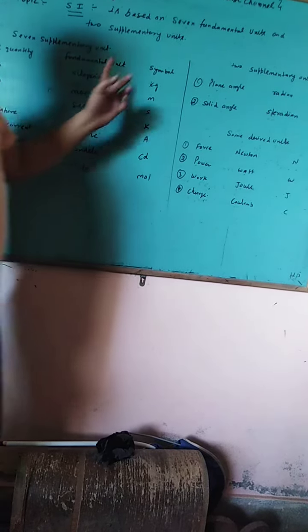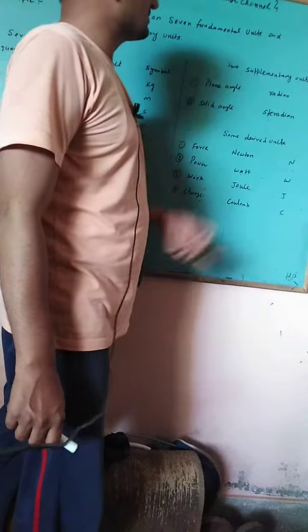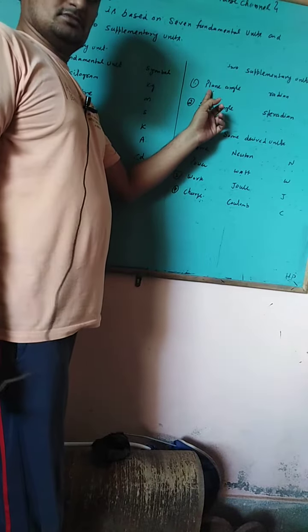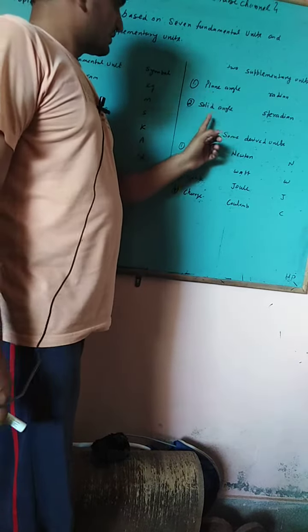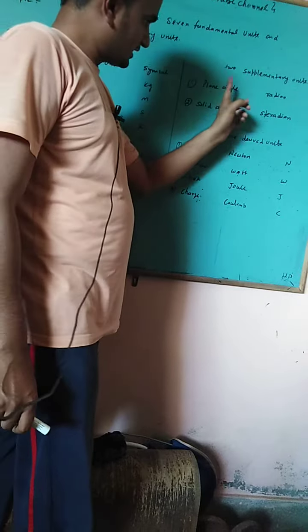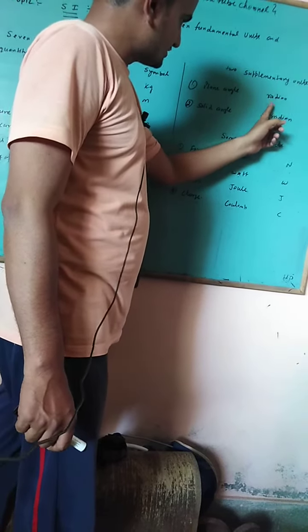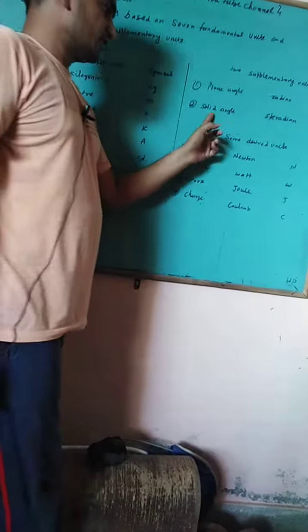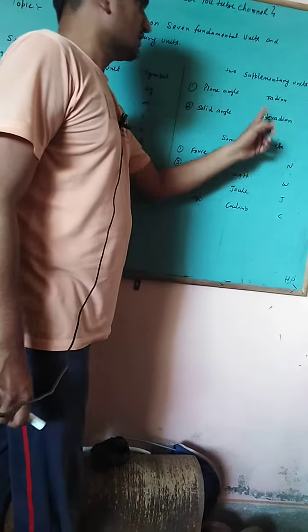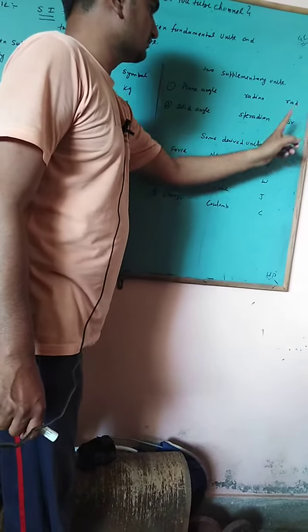Two supplementary units of the SI system are plane angle and solid angle. Plane angle is a supplementary unit, the unit is radian, and the symbol is rad or r. Solid angle symbol is SR for steradian.